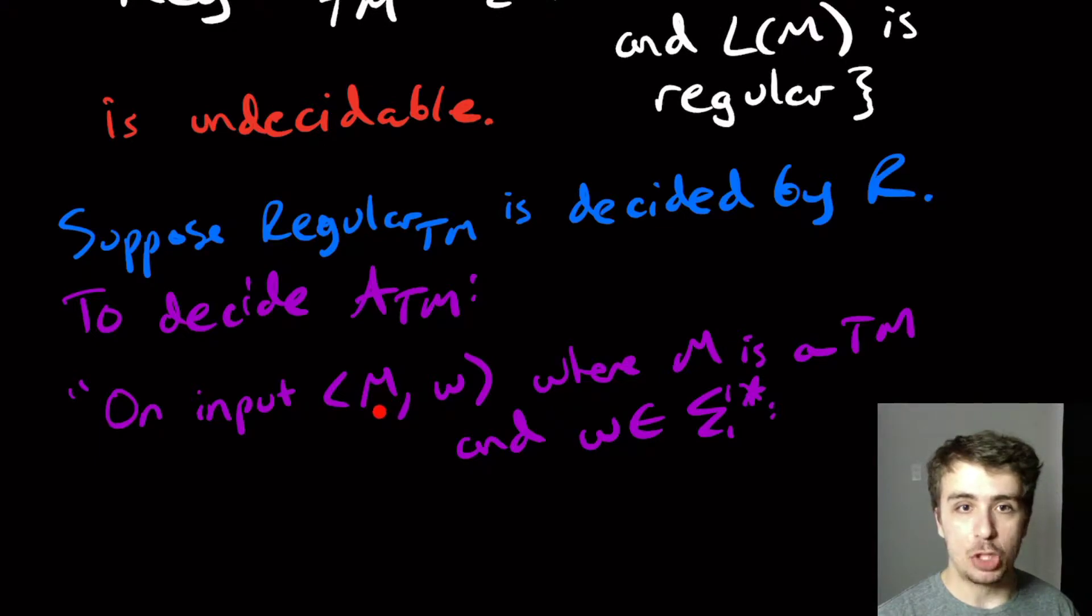If I feed this machine into the decider for regular, whether it's regular or not does not tell us anything about whether it accepts W specifically.